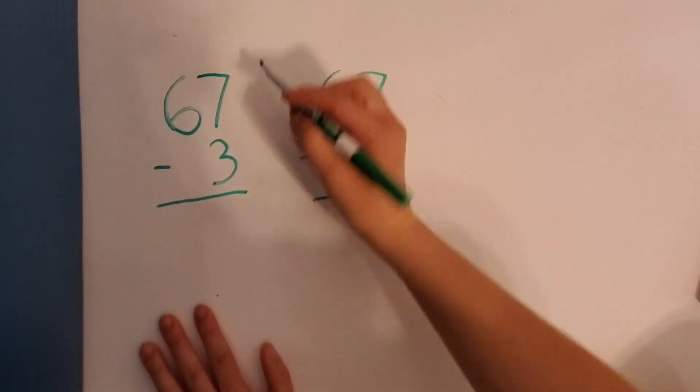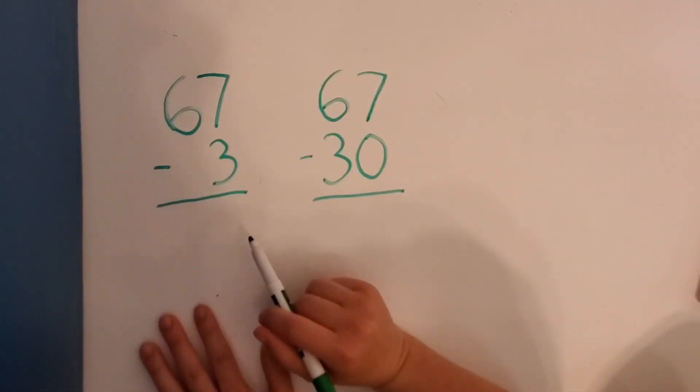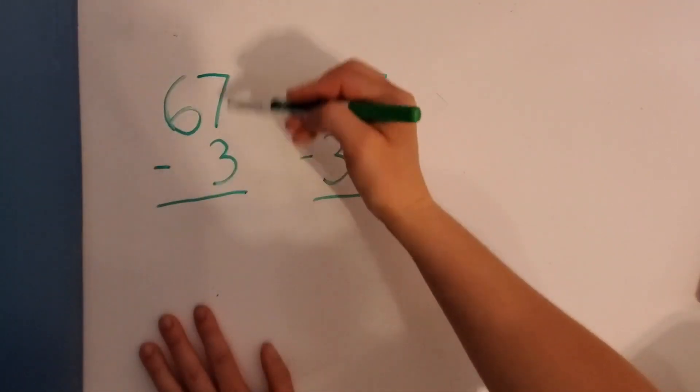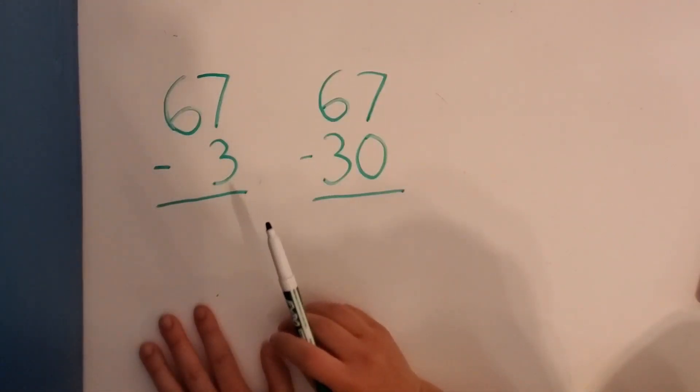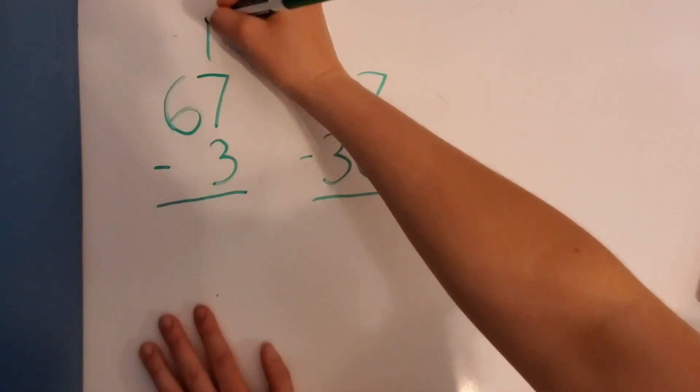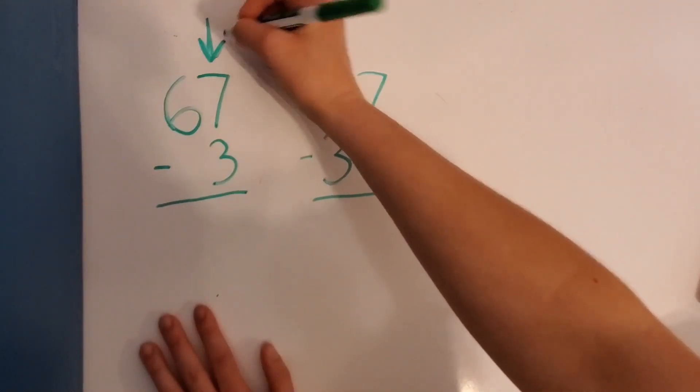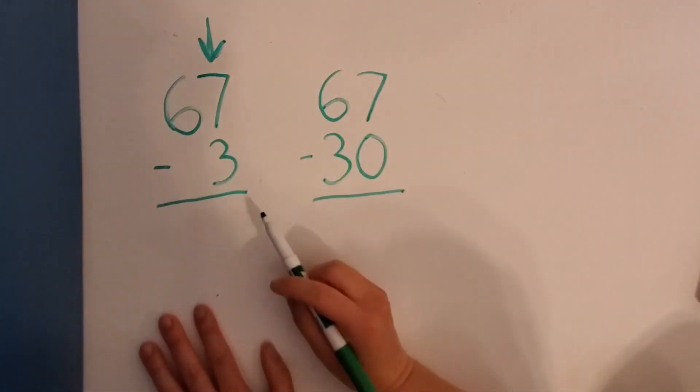So which side do we subtract first? We have our 10s over here and our 1s over here. So which one do we subtract with first? 1s, right? We always start with the 1s.